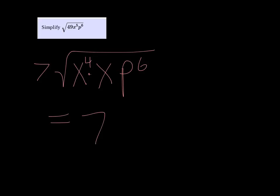So this is going to be 7. Now x to the fourth, the square root of that would be x squared, and the square root of p to the sixth would be p cubed, so all that's left inside the square root is just x.